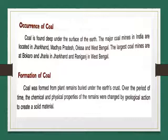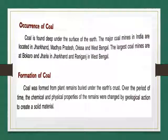Coal is found deep under the surface of the earth. The major coal mines in India are located in Jharkhand, Madhya Pradesh, Orissa, and West Bengal. The largest coal mines are at Bokaro and Jharia in Jharkhand, and Raniganj in West Bengal.